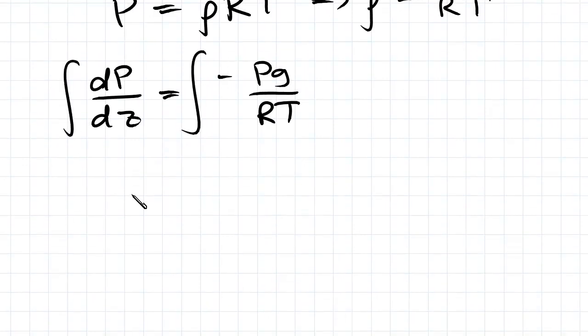Integrating both sides, we get... actually first I will rearrange it. So I'll have dP on P equals negative G...